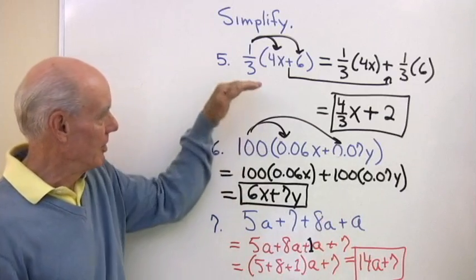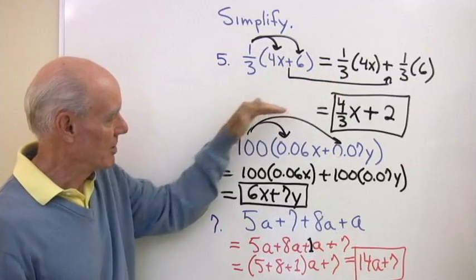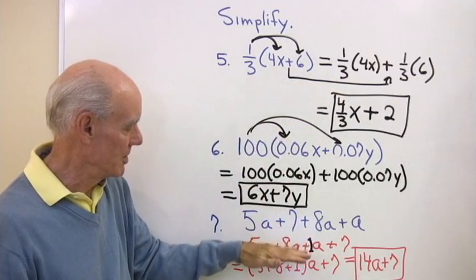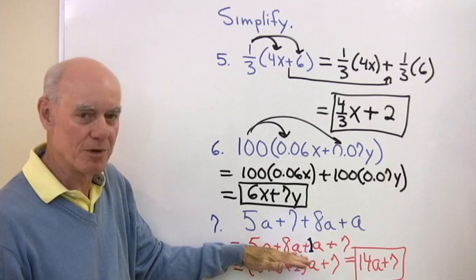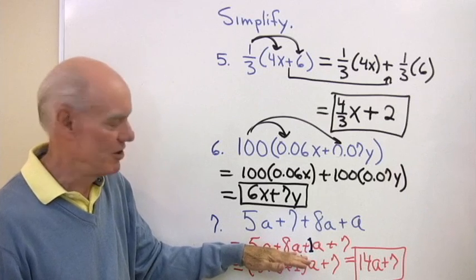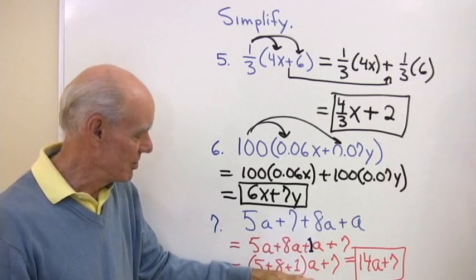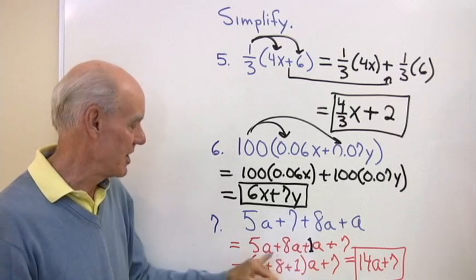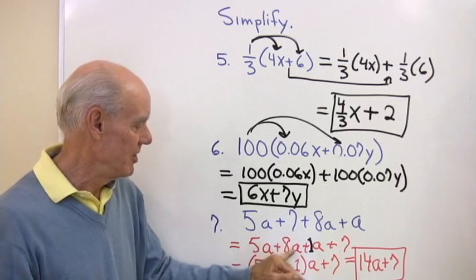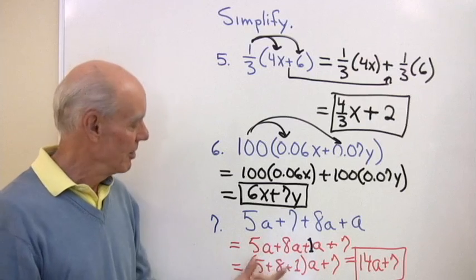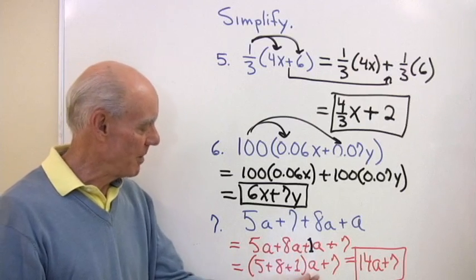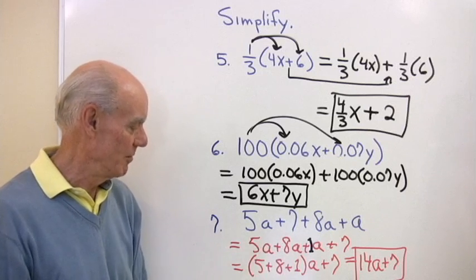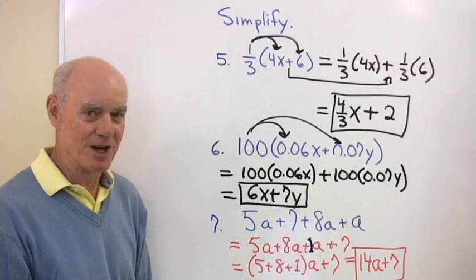The key to working this problem is first the distributive property applied in one direction, then the commutative property to rearrange terms, and then the distributive property in reverse to factor out a. You can always check by multiplying a back into each term to verify you get what you started with.